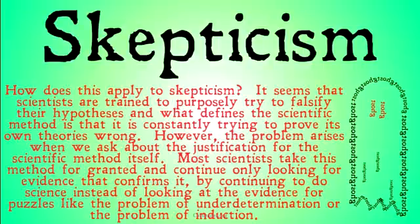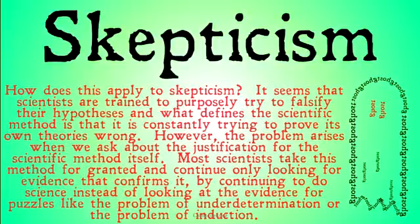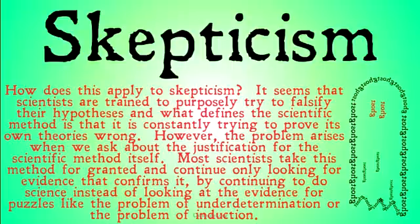How does this apply to skepticism? It seems that scientists are trained to purposefully try to falsify their hypotheses, and what defines the scientific method is that it is constantly trying to prove its own theories wrong. So it would seem the scientific method is geared towards avoiding confirmation bias. However, the problem arises when we ask about the justification for the scientific method itself. Most scientists take this method for granted and continue only looking for evidence that confirms it by continuing to do science, instead of looking for evidence from puzzles like the problem of underdetermination or the problem of induction, which argue against the scientific method and suggest it does not actually provide truth. Note that this isn't a problem for everyone who uses science, but rather for scientific realists who believe science says something about the world.